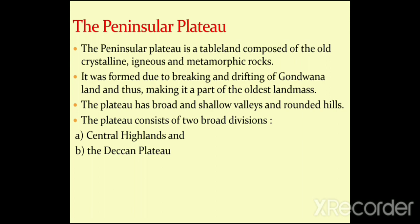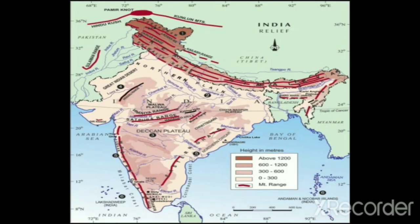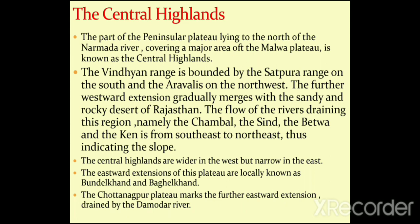The plateau consists of two broad regions: (a) the Central Highlands and (b) the Deccan Plateau. The northern plains lie to the north, and the Deccan Plateau lies to the south. Let's understand the Central Highlands first.